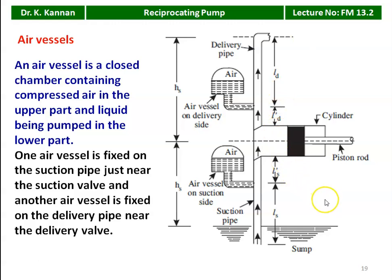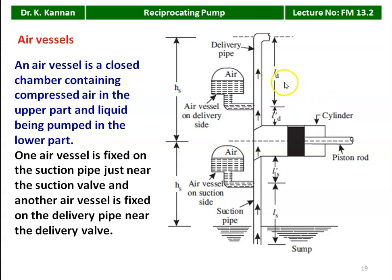That is the advantage of the air vessel in the single acting reciprocating pump. The designations: HS is the suction head, HD is the delivery head. LD is the length of the delivery pipe, L'D is the length between the air vessel and the top of the cylinder, and L'S is the length between the air vessel and the cylinder on the suction side. The center of the air vessel is measured as suction head.